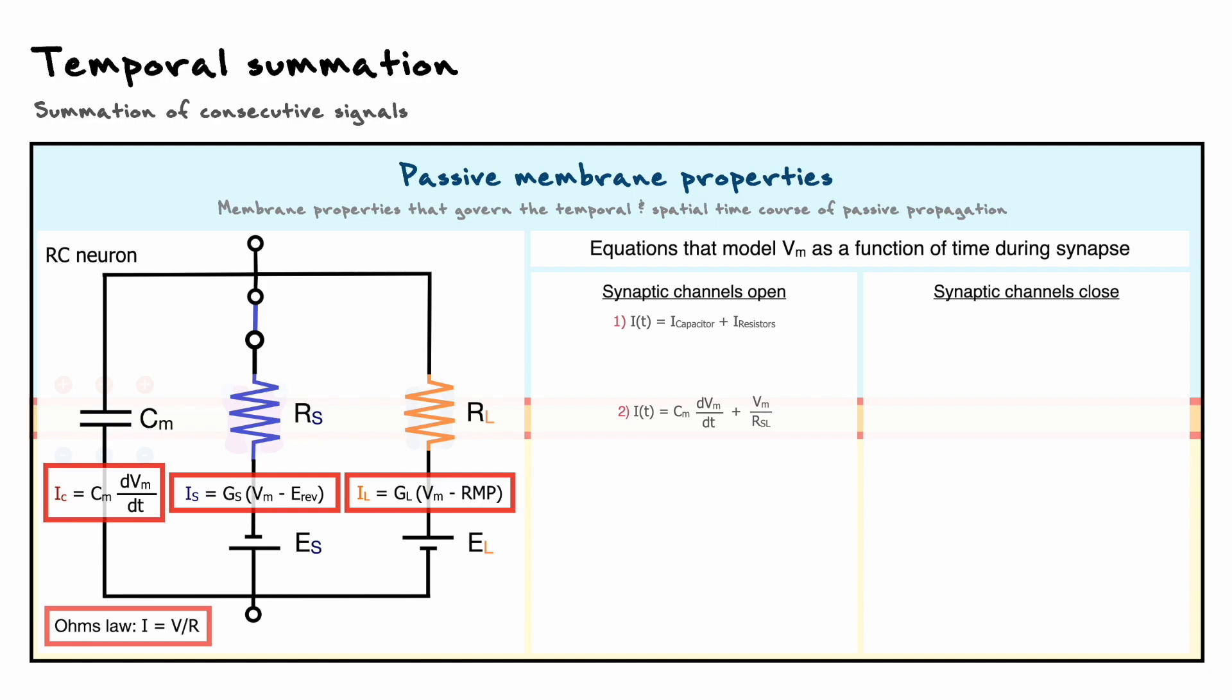Here it gets a bit tricky because as I mentioned a few moments ago, synaptic channels will be active during the synapse and for that reason they will affect the resistance of the system. Based on electric circuit laws, we can find the total sum of the resistances by taking the inverse of the sums of the inverse of each resistance. I will note this new resistance that occurs during the synapse as RSL.